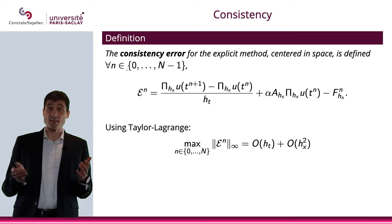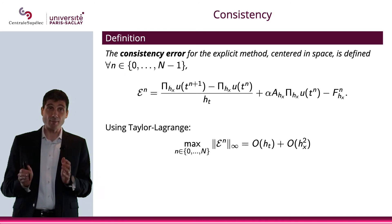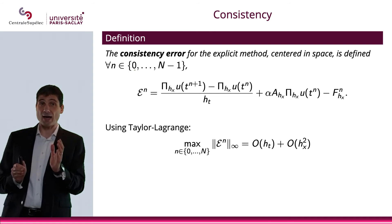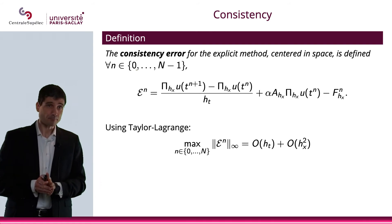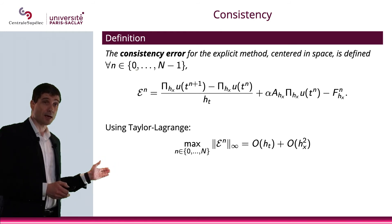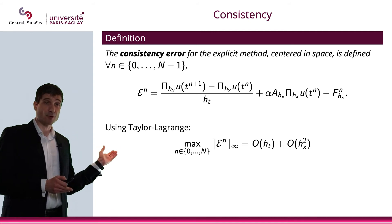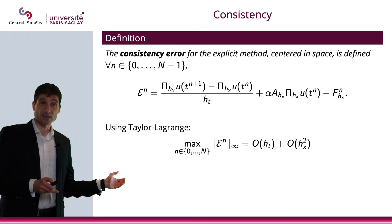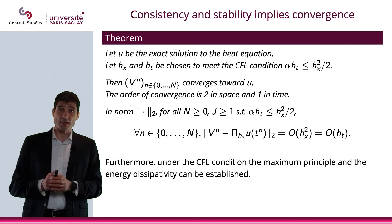Let me define the consistency error for the explicit method centered in space. It will be defined by a specific expression where π is the projection onto the grid. Using the Taylor-Lagrange expansion, the maximum of that expression is first order in time and second order in space.